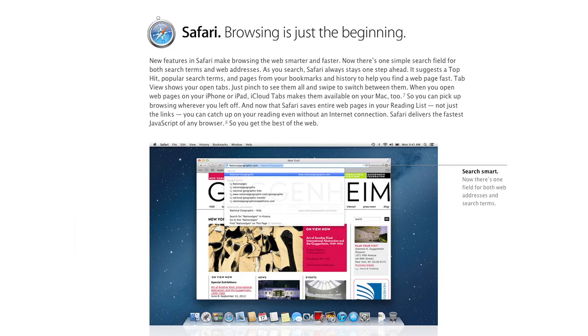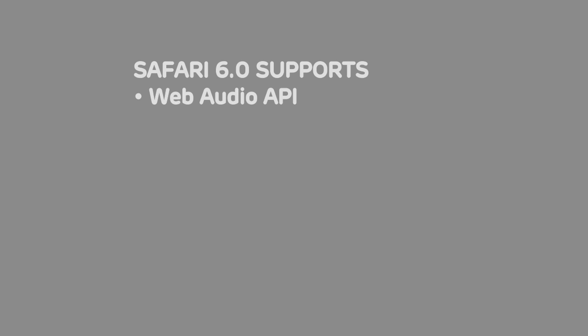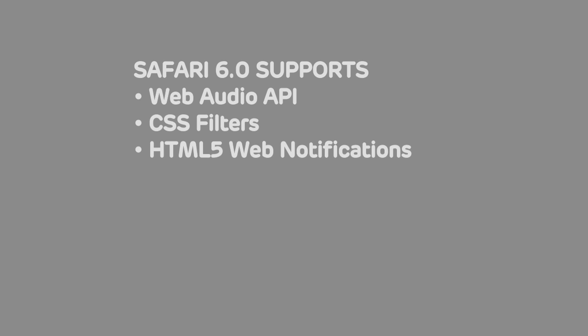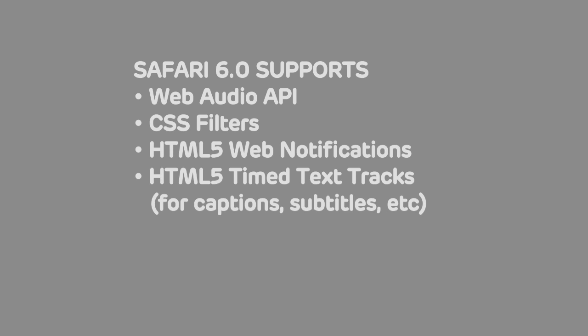Also new is Safari 6.0, which is actually an exciting release for web developers. Some things that it supports are the Web Audio API, CSS Filters, HTML5 Web Notifications — so you can actually have web pages notify you too, instead of just your phone. There's also HTML5 timed text tracks, which is very useful for adding things like subtitles to videos on websites. Safari 6.0 also supports the latest JavaScript standard.